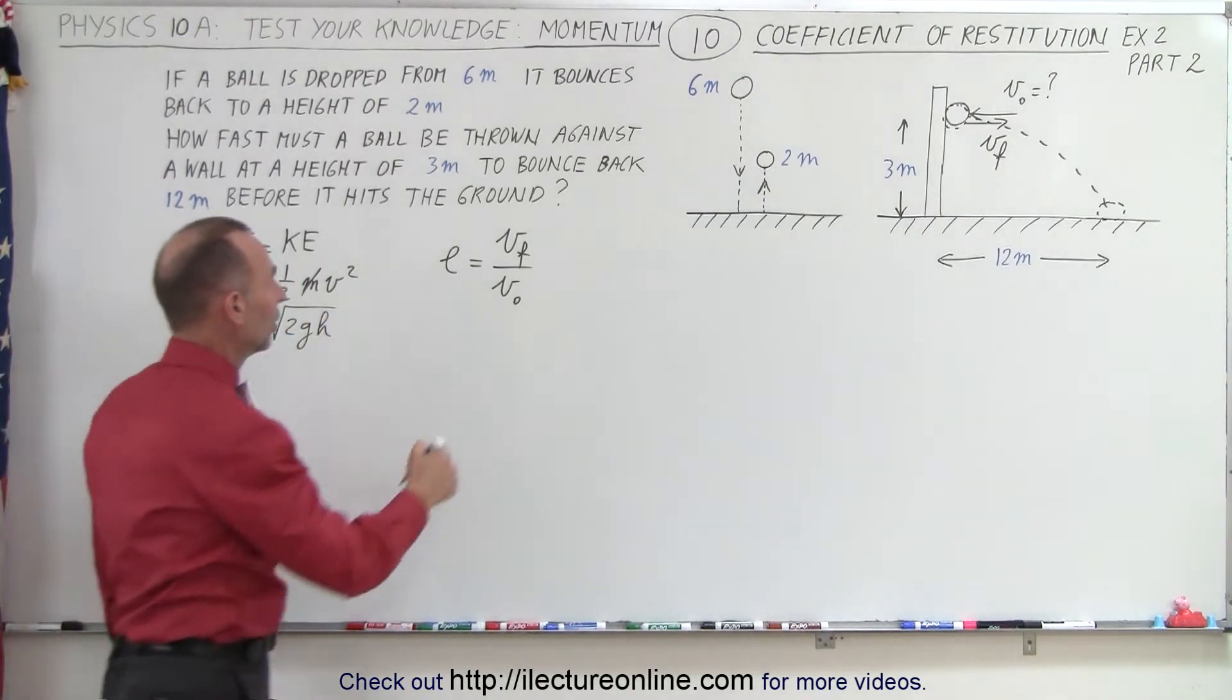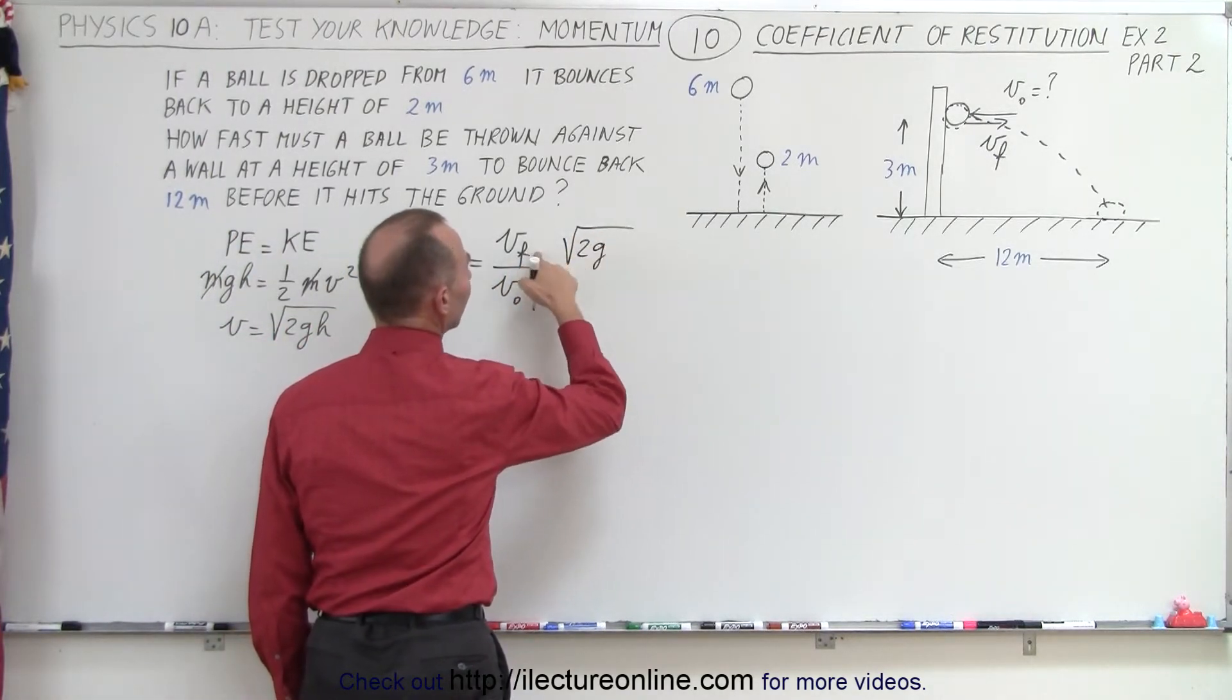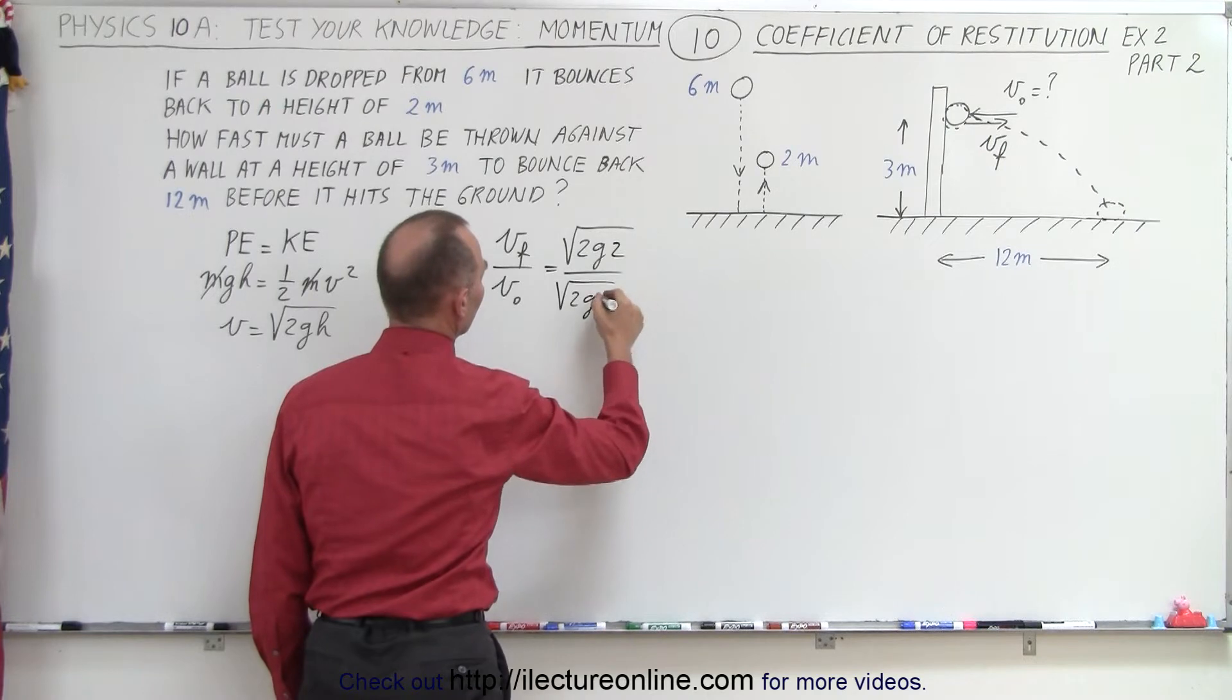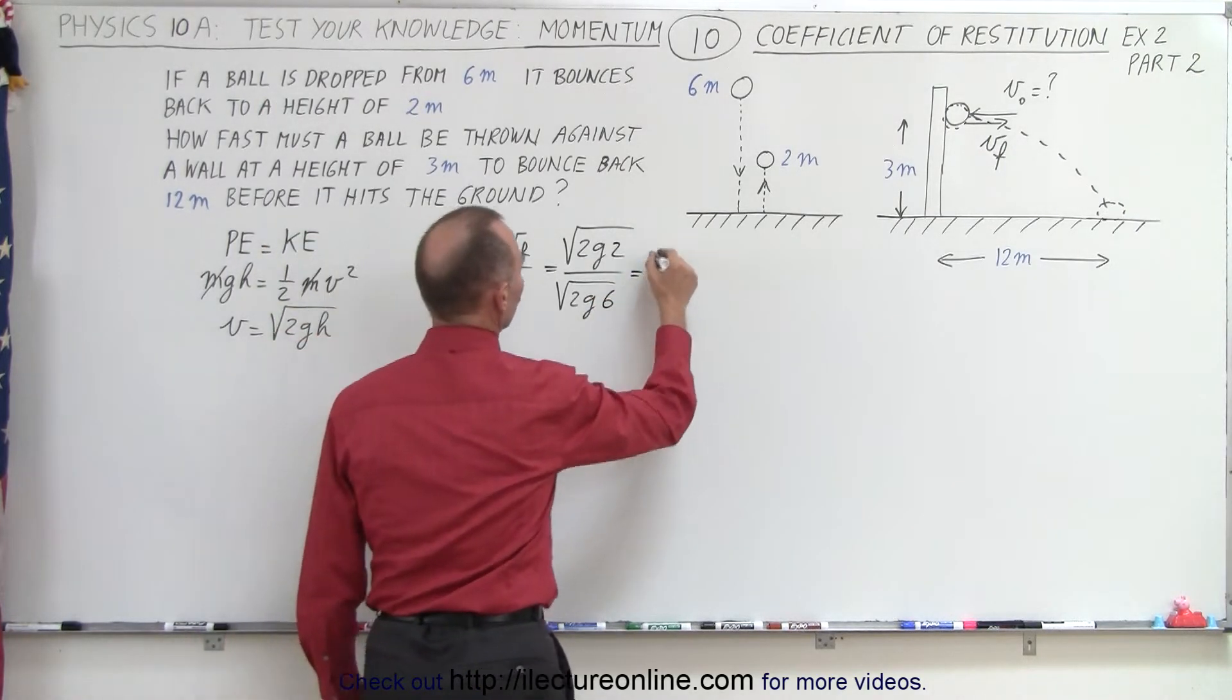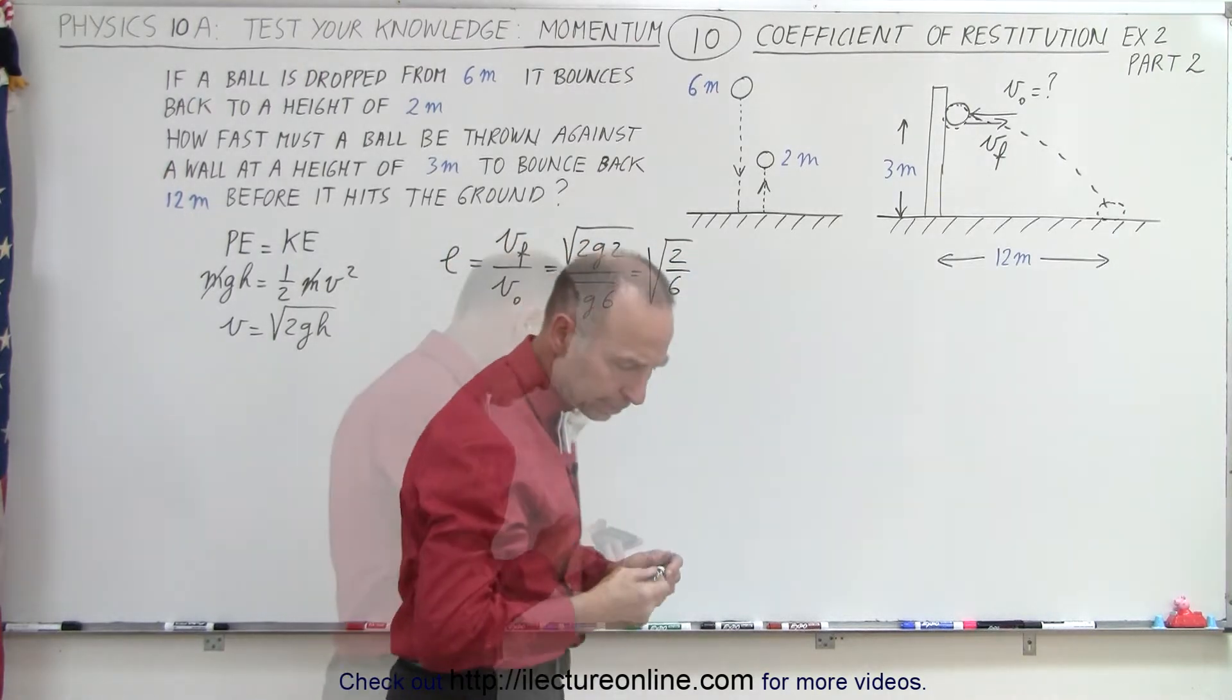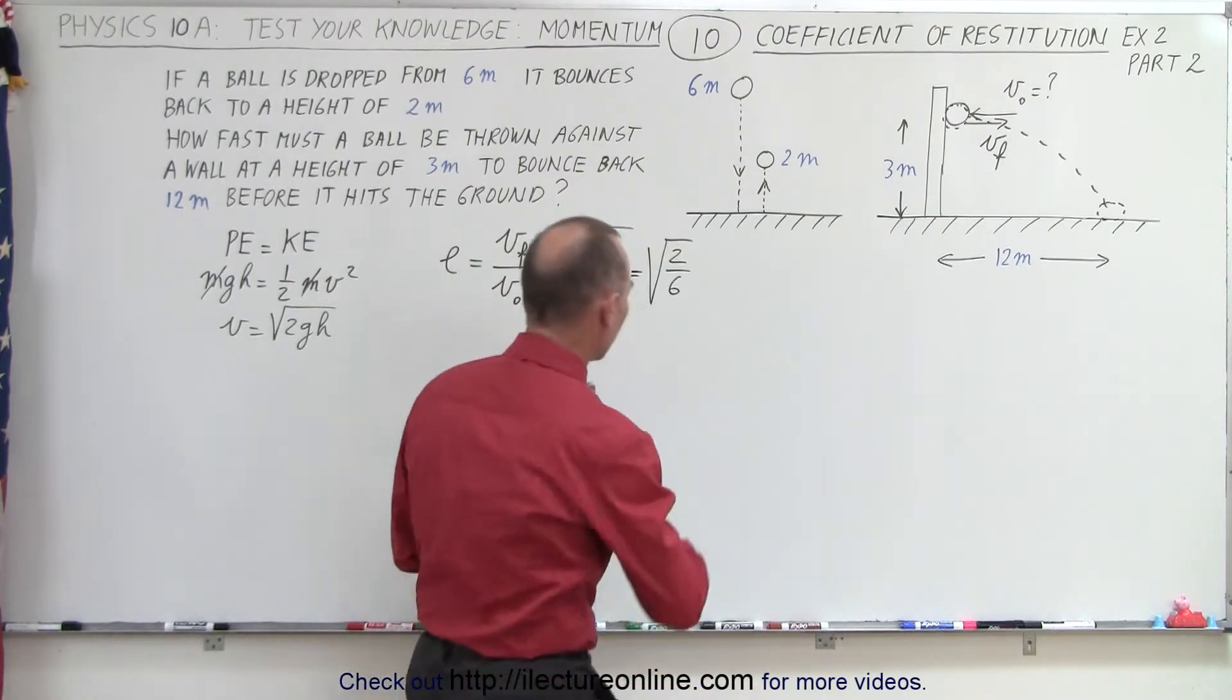And so, therefore, the final velocity can be written as the square root of 2g times the final height, which is 2 meters, divided by the square root of 2g times the original height, which is 6 meters. So basically, this is equal to the square root of 2 divided by 6, or 1 divided by 3. Take the square root of that, which is 0.5774.